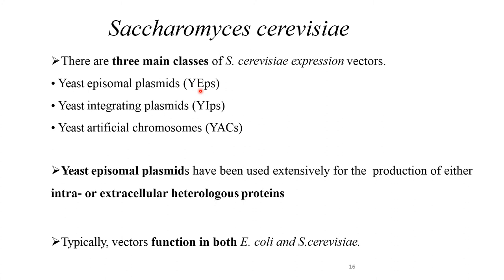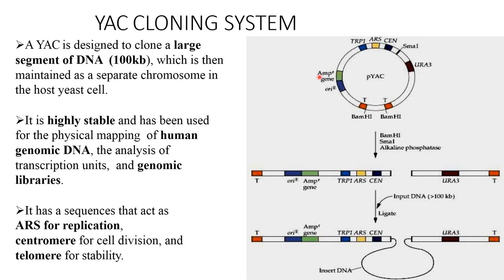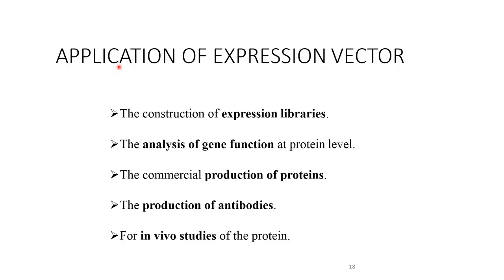There are three main classes of S. cerevisiae expression vectors: yeast episomal plasmids, yeast integrating plasmids, and yeast artificial chromosomes (YACs). Episomal plasmids have been used extensively for production of intra- or extracellular heterologous proteins; vectors typically function in both E. coli and S. cerevisiae. The YAC system is designed to clone large segments of DNA up to 100 kb, maintained as a separate chromosome in a host yeast cell. It is highly stable and has been used for physical mapping of human genomic DNA, analysis of transcription units, and genomic libraries. It has sequences that act as ARS for replication, centromere for cell division, and telomere for stability.